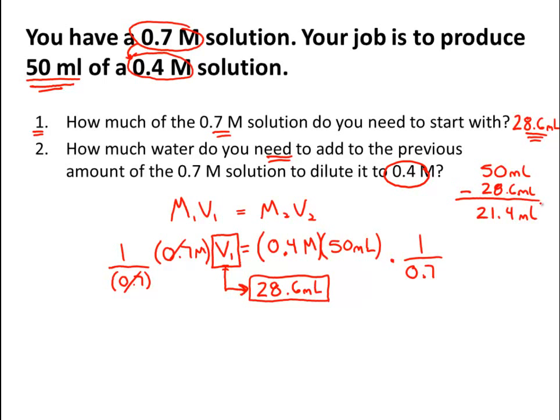Alright dude so there's our two answers. Originally I needed 28.6 milliliters of the original concentrated solution in order to add 21.4 milliliters of water to that to make a 0.4 molar solution. Awesome. Let's go on to the next problem.